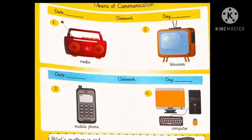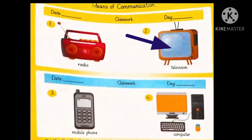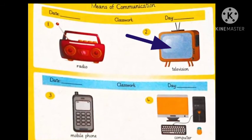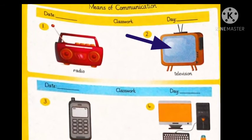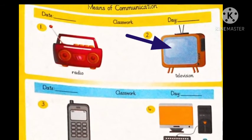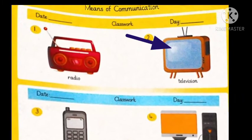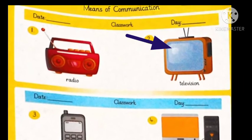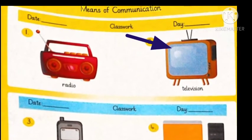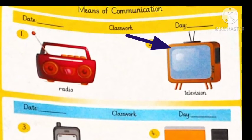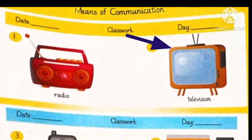Now come to the next picture. Yes, it's a television. What can we do on television? It is a source of communication because it gives us information, shares news with us. We can watch different programs, news, documentaries, and live shows on television. So it is a means of communication. Today we did two means of communication: radio and television.